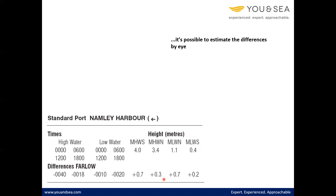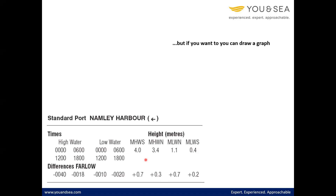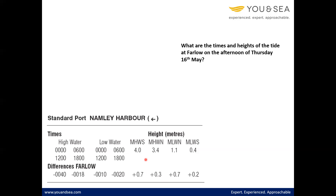It is also very possible to eyeball the difference, particularly for low water where we've only really got a 10 minute difference. Same again with high water — if it's round about 3.7 metres, the high water correction is going to be somewhere in the middle, which is around about 0.5, and you're only ever going to be about 0.1 away from the actual answer. We can draw a graph, and that is where my grid version comes into play. Our scenario is the times and height of the tide at Farlow on the afternoon of the 16th of May.